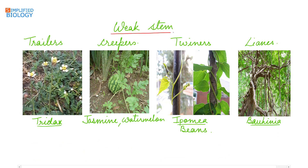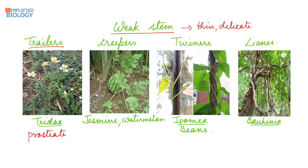Next are weak stems — these are thin, delicate stems. The first type is trailers. Trailers are weak stems that grow prostrate, that is, flat on the surface of the soil, without producing any roots at the nodes. They just spread in all directions. Example: Tridax.